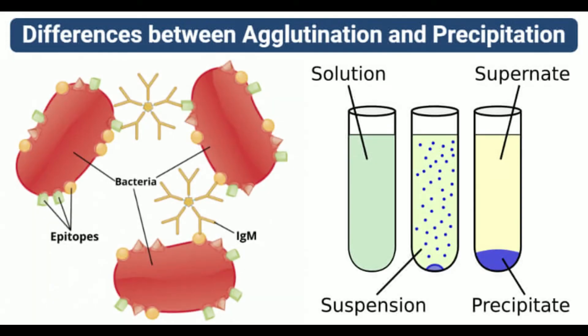Different forms of agglutination are used in diagnostic tests, which include latex agglutination, flocculation tests, direct bacterial agglutination, and hemagglutination. Because the process is quick and straightforward, these diagnostic tests are preferred over other sophisticated tests. Agglutination has been used for the detection of antigens and bacteria, which ultimately helps in the identification of those bacteria.